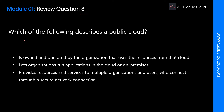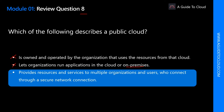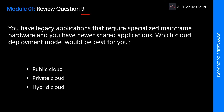Question 8: Which of the following describes a public cloud? Let's read through the options. 'Is owned and operated by the organization that uses the resources' — that is not correct; that term refers to private cloud. 'Lets organizations run applications in the cloud or on-premises' — absolutely wrong, because public cloud only allows applications to run in the cloud, not on-premises. The correct statement is: public cloud provides resources and services to multiple organizations and users who connect through a secure network connection.